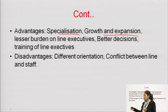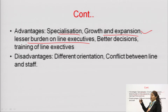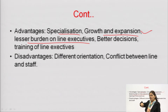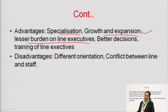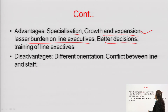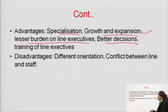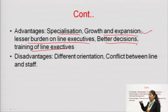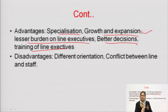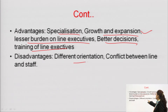Advantages of line and staff organization: specialization exists in this type. Growth and expansion are possible because specialized people exist in the organization — the ultimate responsibility and authority are divided on the basis of departments, so they can think of expansion. Lesser burden on line executives: since work, authority, and responsibility are divided, the line executive is not responsible for everything. Better decisions because specialized people exist.